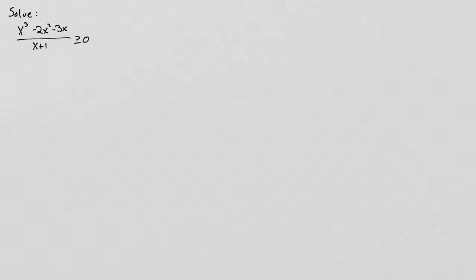First thing I see is there is a greatest common factor on top of x. So I want to factor that out. So I get x times x squared minus 2x minus 3 all over x plus 1.